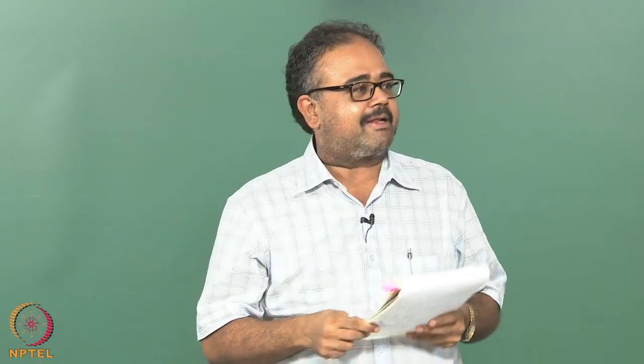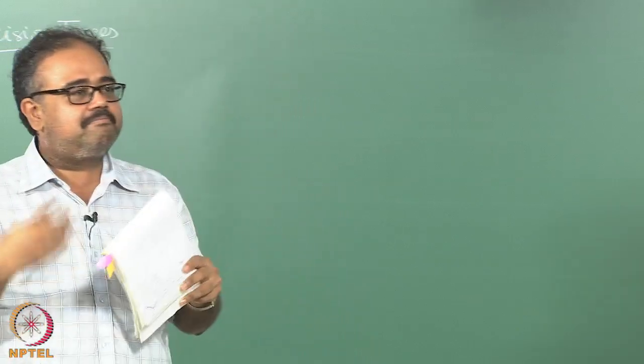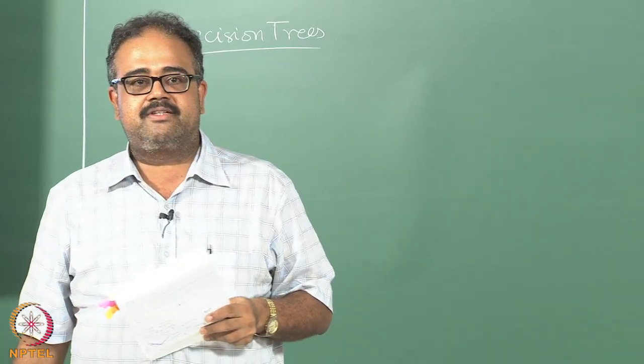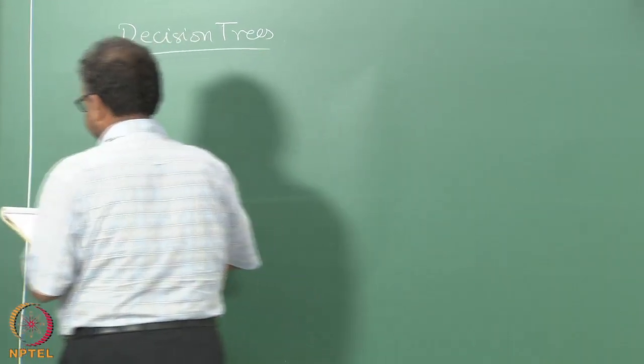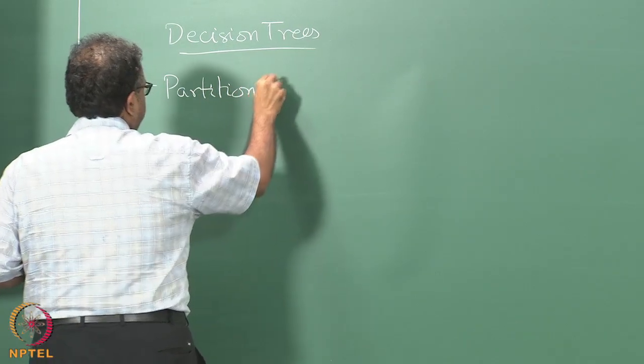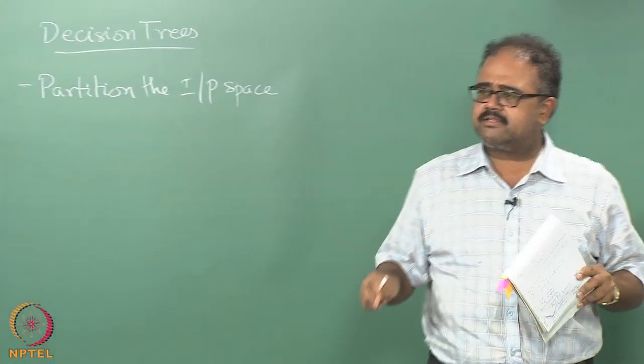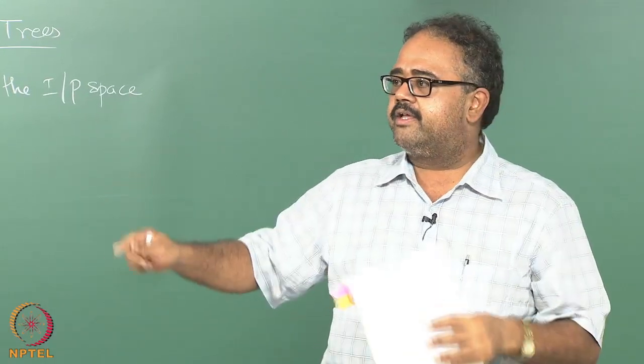I can ask a series of queries and then build some kind of characterization of the object, then say this person is class one, this person is class two, and so forth. That's the whole idea behind decision trees. You're essentially trying to partition the input space into certain regions.